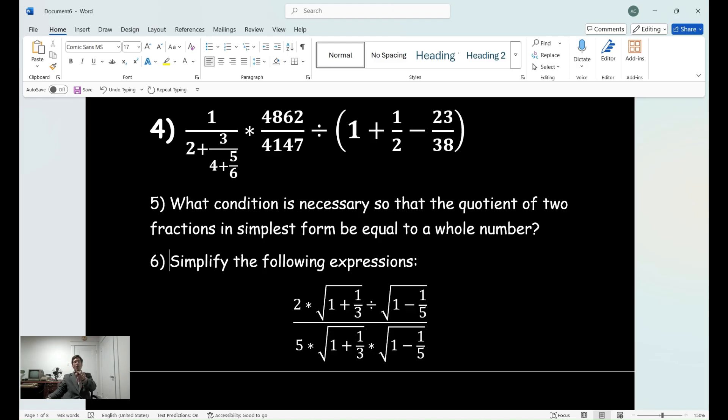Again, no calculator. If you are using a calculator, I don't want to hear from you. I'm not interested in you. I don't care about calculators or computers to solve these problems. Number five says, what condition is necessary so that the quotient of two fractions in simplest form, that is reduced form, which you cannot reduce them at any further lowest terms, so that they be equal to a whole number? And then the last question I put here is, this is actually what's going to be part of the lesson tomorrow, how to manipulate expressions that have radicals.